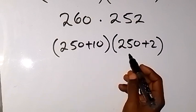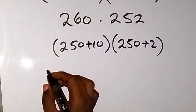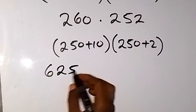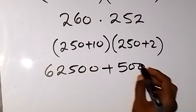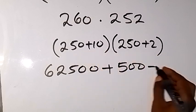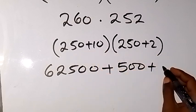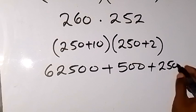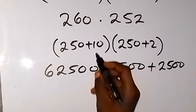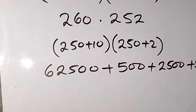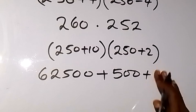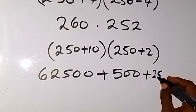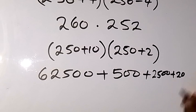Expanding: 250 times 250 gives us 62,500; plus 250 times 2 gives us 500; plus 10 times 250 gives us 2,500; plus 10 times 2 gives us 20. We then add all these together.